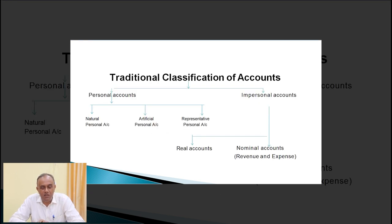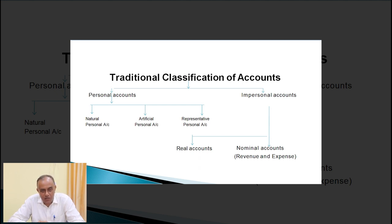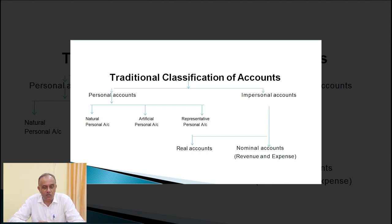As per the traditional classification of accounts, accounts are generally of two types: one is personal account and another is impersonal account. Personal accounts are of three types: natural person, artificial person, and representative person. Personal accounts are those accounts which relate to any person.